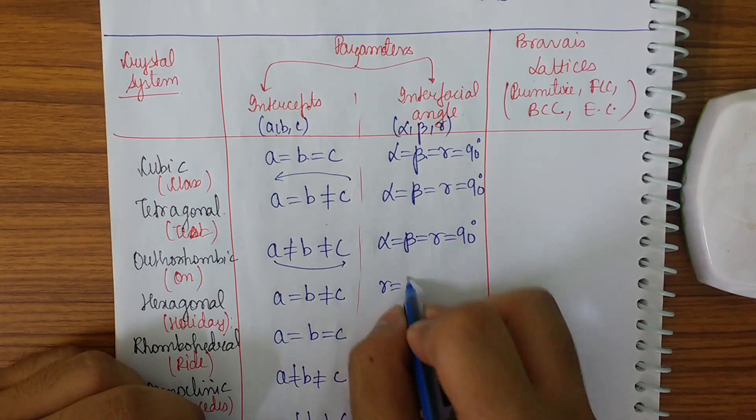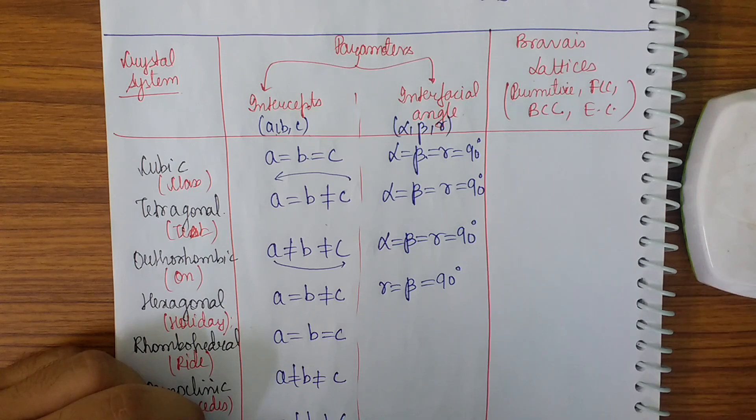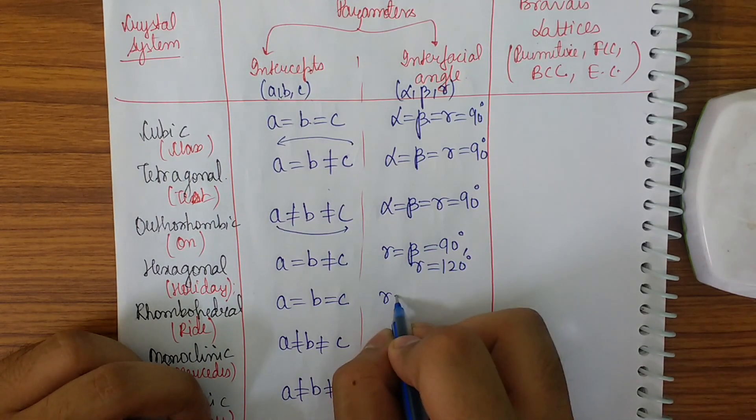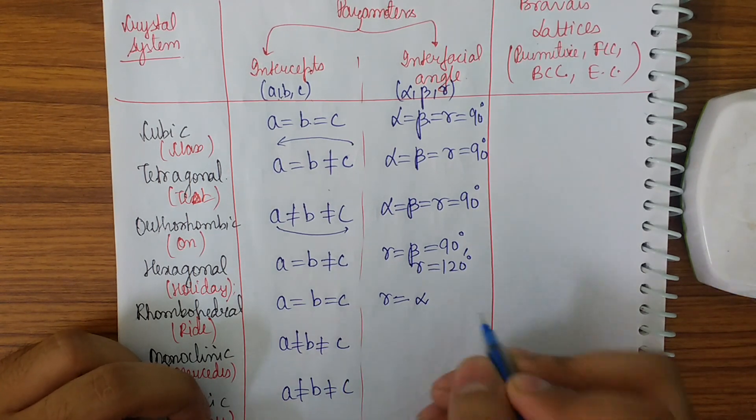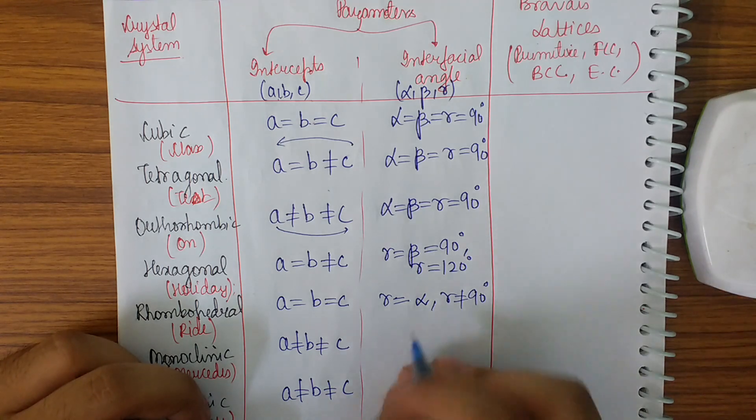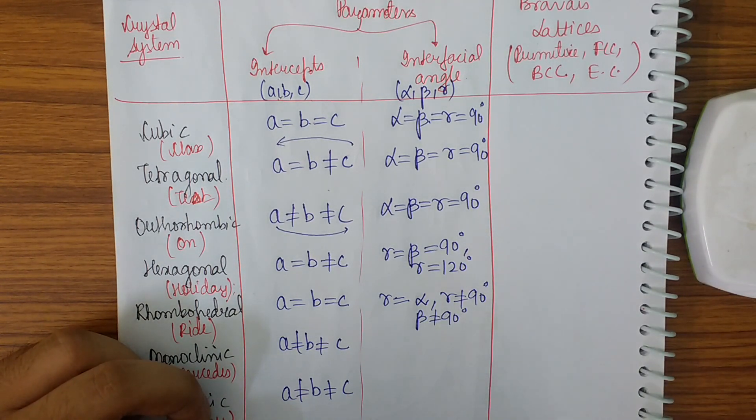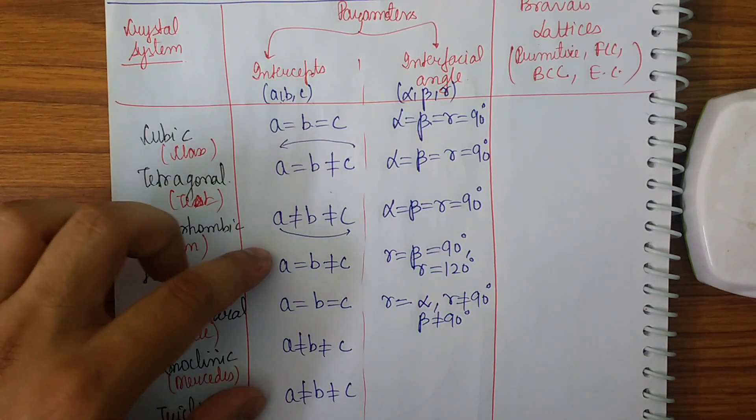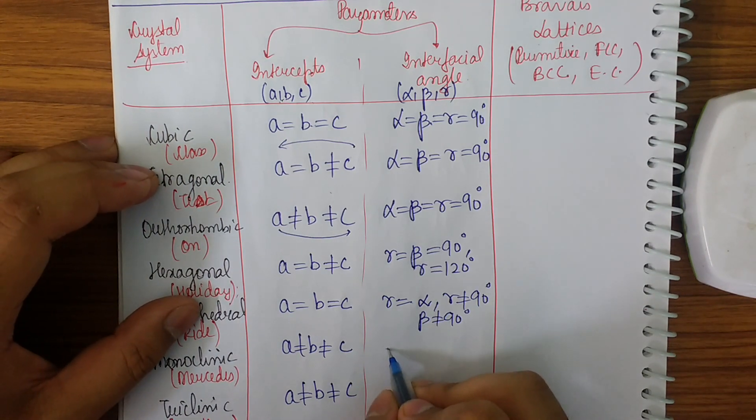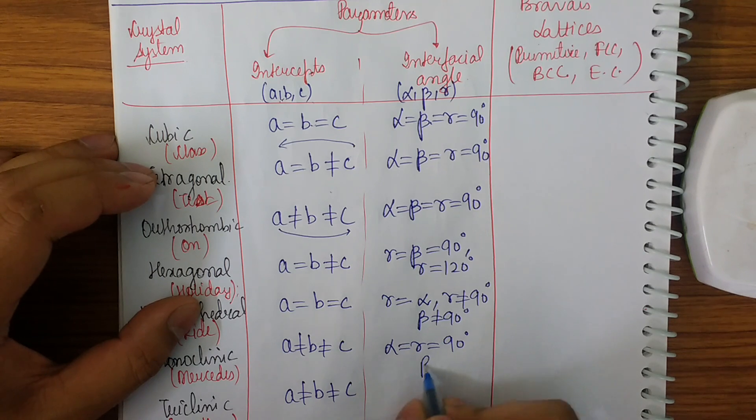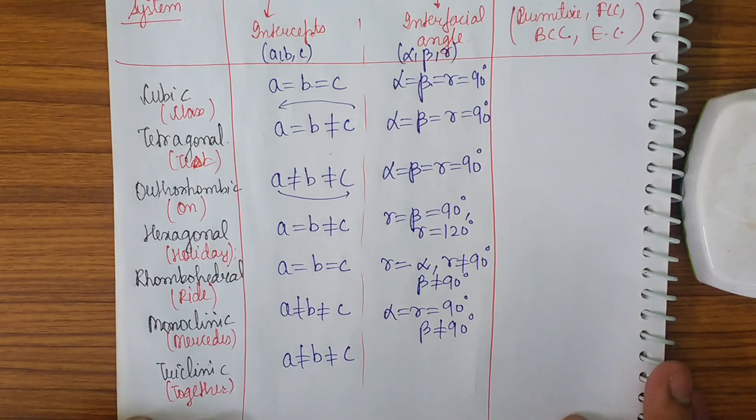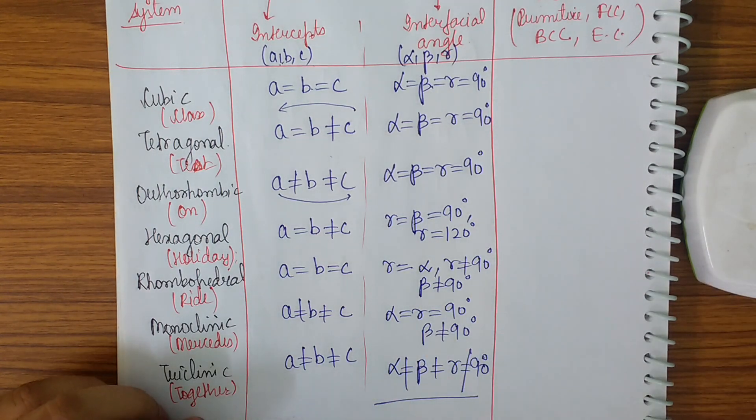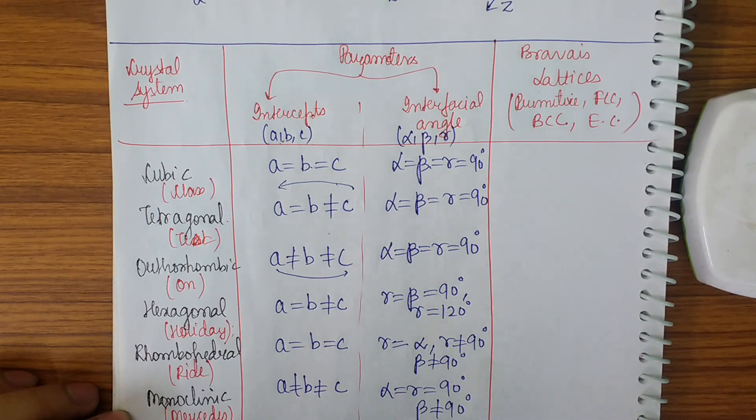In the next one, alpha is equal to beta is equal to 90 degrees and gamma is equal to 120 degrees. In the next one just put a not equal sign: gamma is equal to alpha but gamma is not equal to 90 degrees and beta is also not equal to 90 degrees. Just shift one angle, first start with 90 degrees, then also 90 degrees, then we are replacing just one angle from the cube. Now let's go to the next one, monoclinic. Alpha will be equal to gamma is equal to 90 degrees and beta is not equal to 90 degrees. Let's get to the last case, triclinic. In this, alpha will not be equal to beta is not equal to gamma is not equal to 90 degrees.